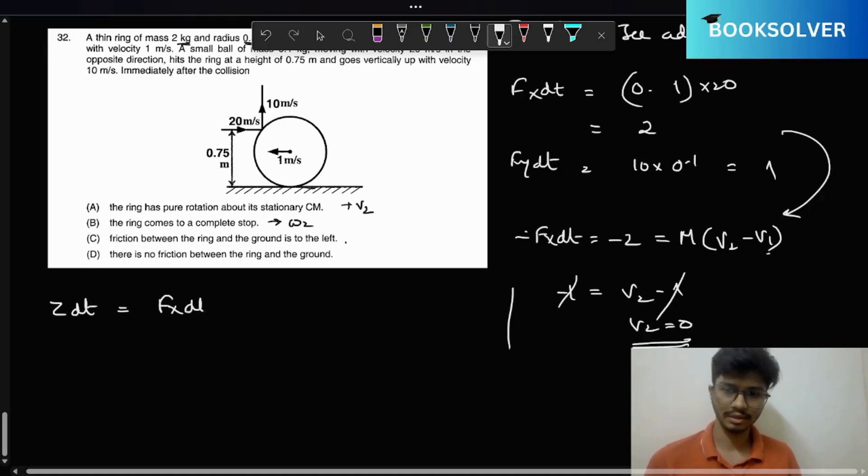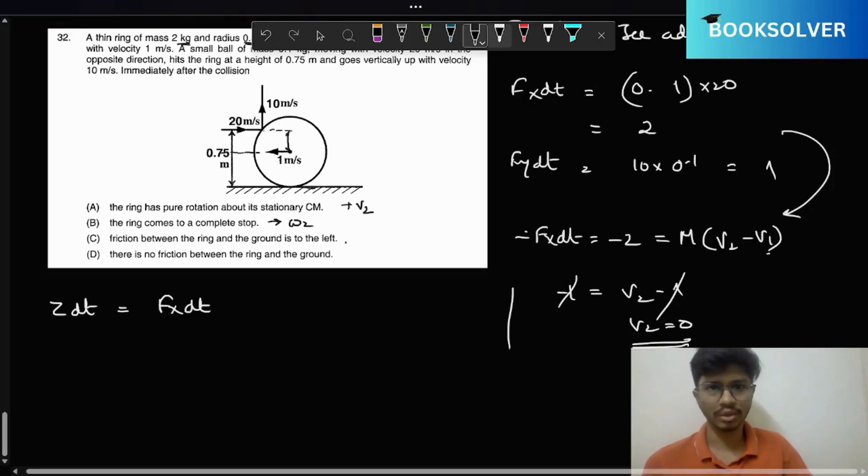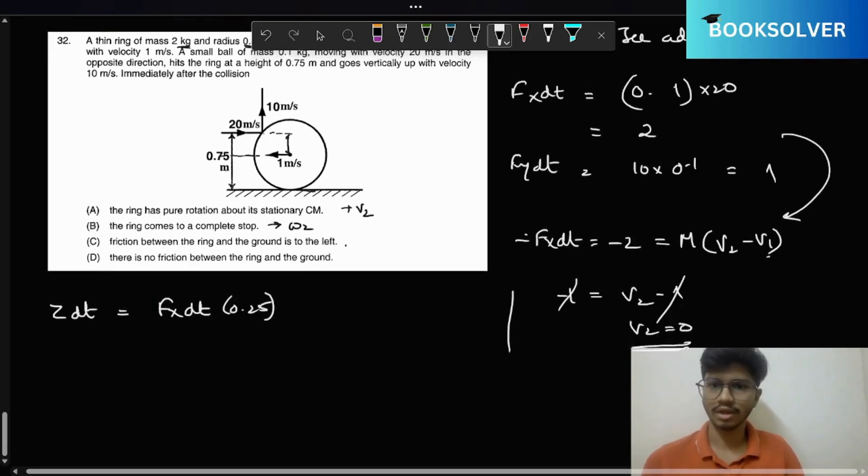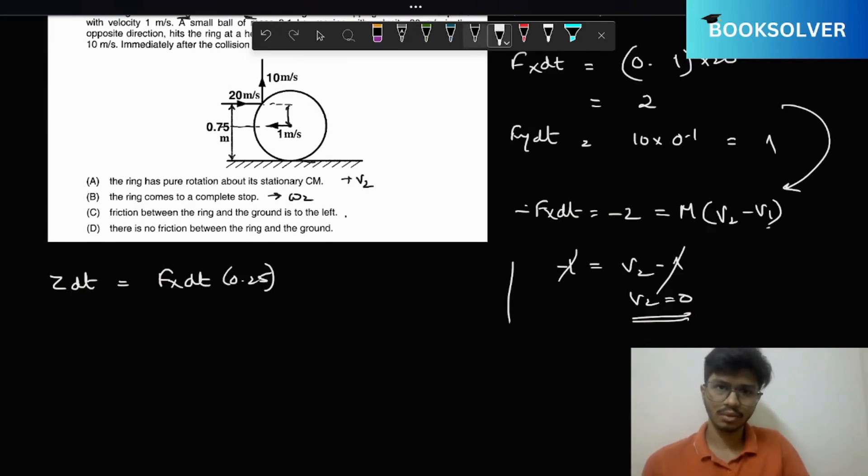Tau dt equals Fx dt into this length. It's basically 0.25. This line is basically 0.25. So we can directly write 0.25 over here because the radius is 0.5. This will try to rotate it in this direction.